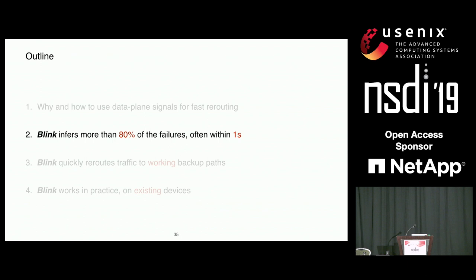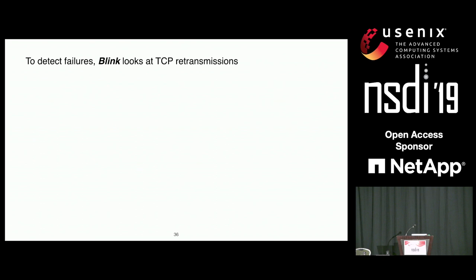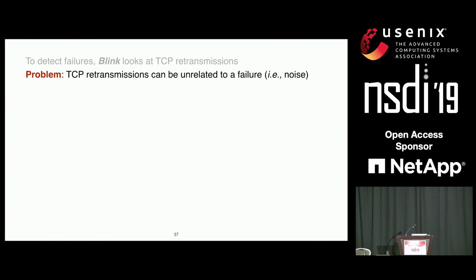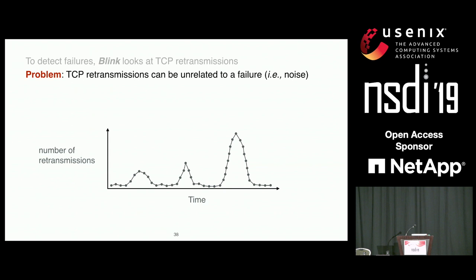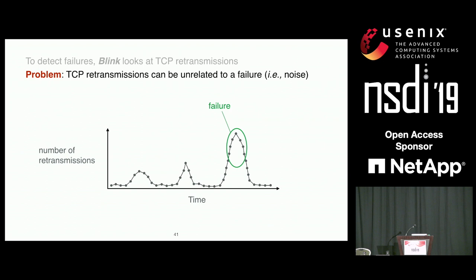Now I'll show you how Blink leverages this signal to accurately infer failure, often within one second. To detect failures, Blink looks at TCP retransmissions. The problem is that TCP retransmissions can be completely unrelated to any failure — caused by congestion, or by one bogus flow sending lots of retransmissions. Blink needs to distinguish between failures and noise, entirely in the data plane. This is clearly one challenge.